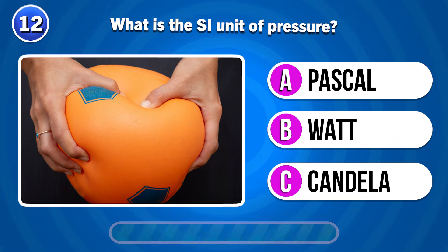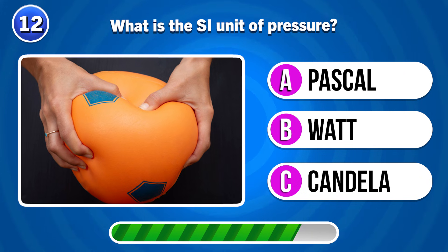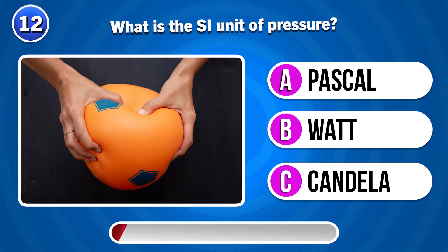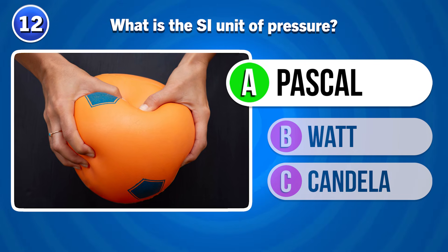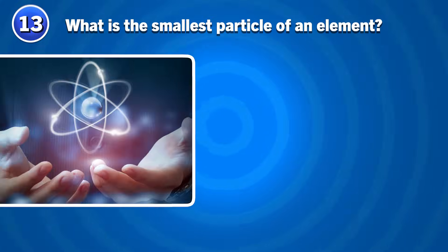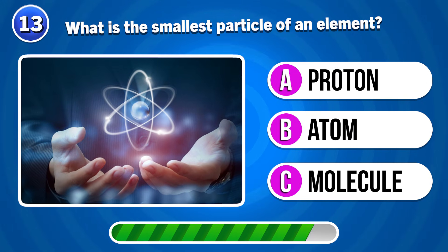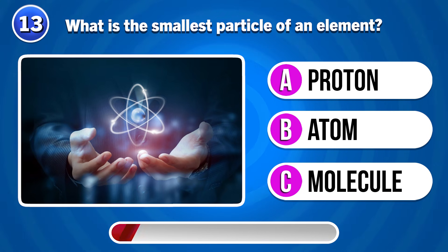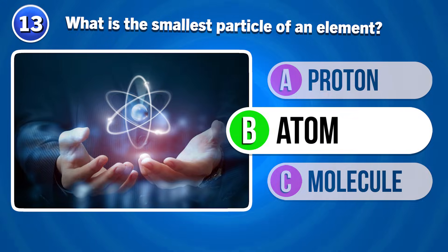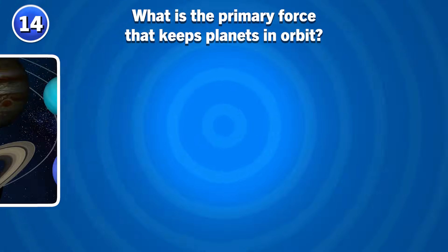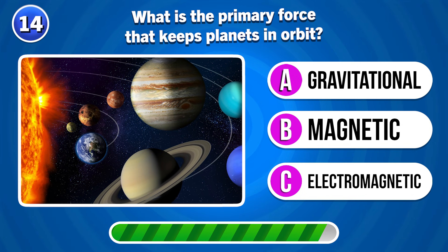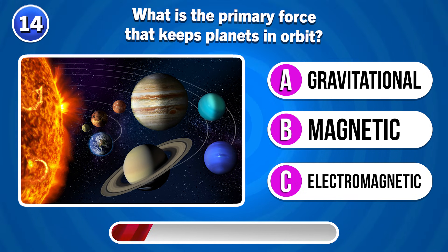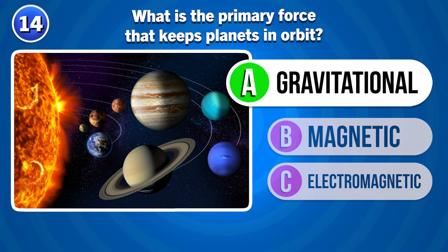What is the SI unit of pressure? Pascal. What is the small particle of an element? Atom. What is the primary force that keeps planets in orbit? Gravitational force.